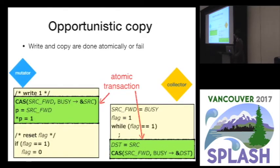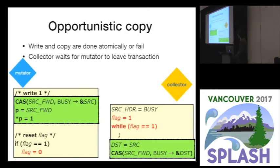So Staccato uses an optimistic copying protocol. Staccato regards these operations as atomic transactions — they are either atomically done or fail. This is realized by the collector waiting for the mutator to leave the transaction. The collector sets the flag and waits for the flag to be reset. The mutator resets the flag outside the write operation. So if this protocol works properly, these operations are executed atomically.